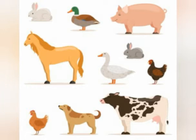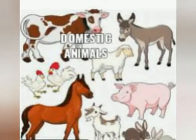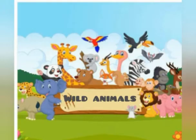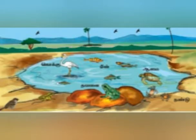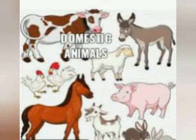See children, animals are of different kinds. Some live with us in our farms and homes — they are called domestic animals. Some live in the forest — they are called wild animals. Some live in water — they are called water animals. Let's see first: domestic animals.